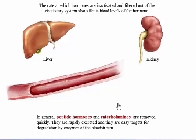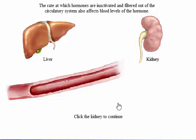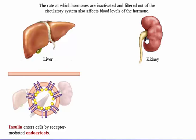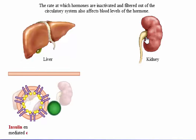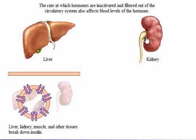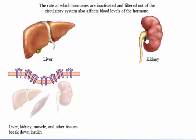Most peptide hormones and catecholamines have a half-life between seconds and an hour. We will look at insulin and epinephrine in detail. After insulin binds to its receptors, the complex enters the cell by receptor-mediated endocytosis. Insulin is broken down by enzymes present in liver, kidney, muscle, and other tissues. The insulin receptors can be recycled to the cell membrane.